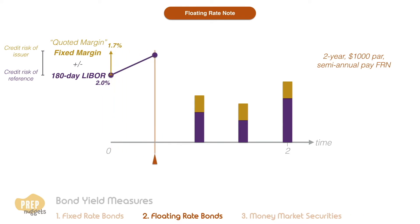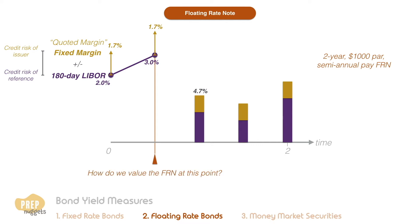At the next reset date, 180-day LIBOR has risen to 3%, so when we add the fixed quoted margin of 1.7%, the coupon rate for the next payment should be 4.7%. The question at this point is: how do we value the FRN at this point?